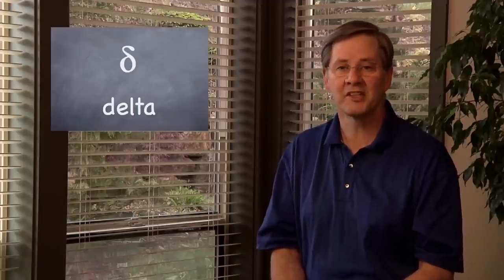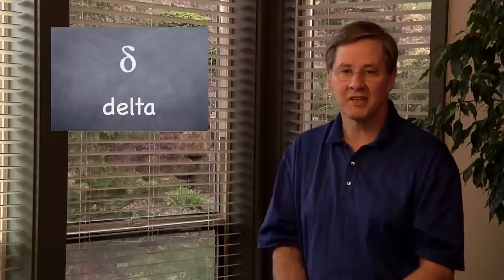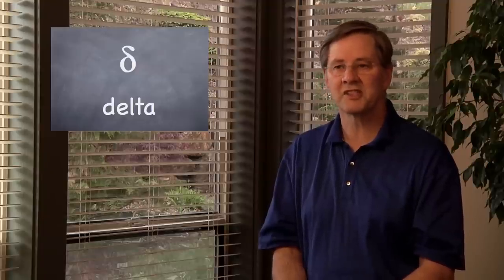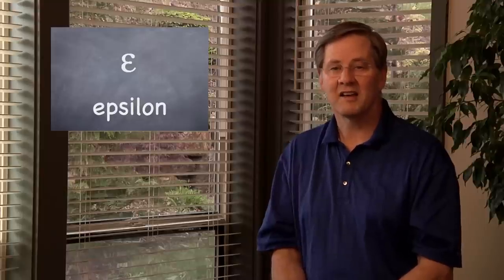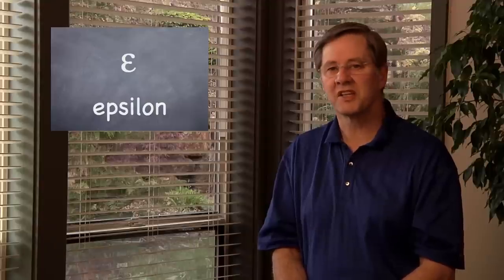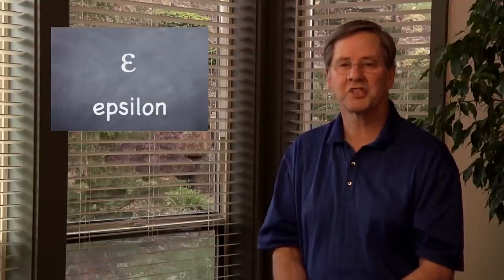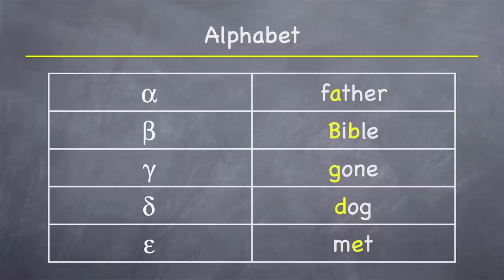The fourth letter is the D sound, called delta, pronounced like the D in the English word 'dog.' The next letter is epsilon, a short E sound, like the E in the English word 'met.' So say those with me: alpha, beta, gamma, delta, epsilon.